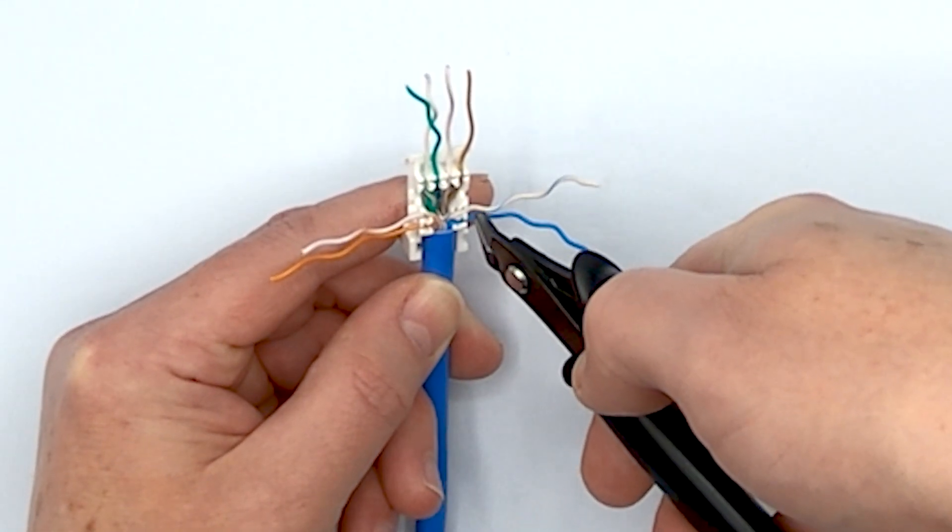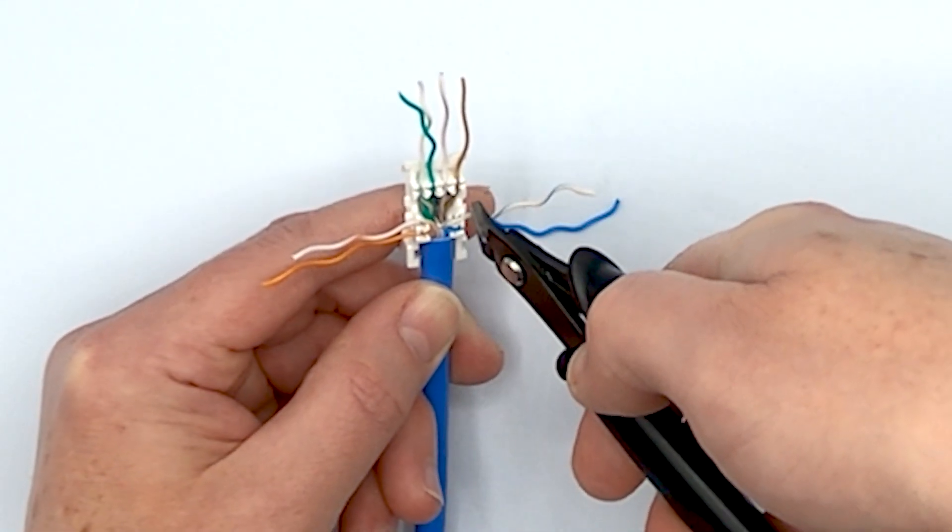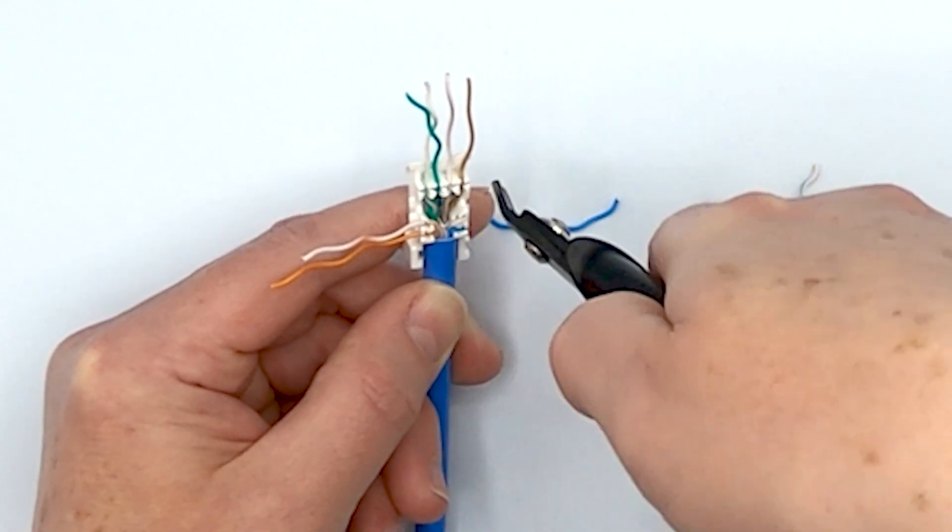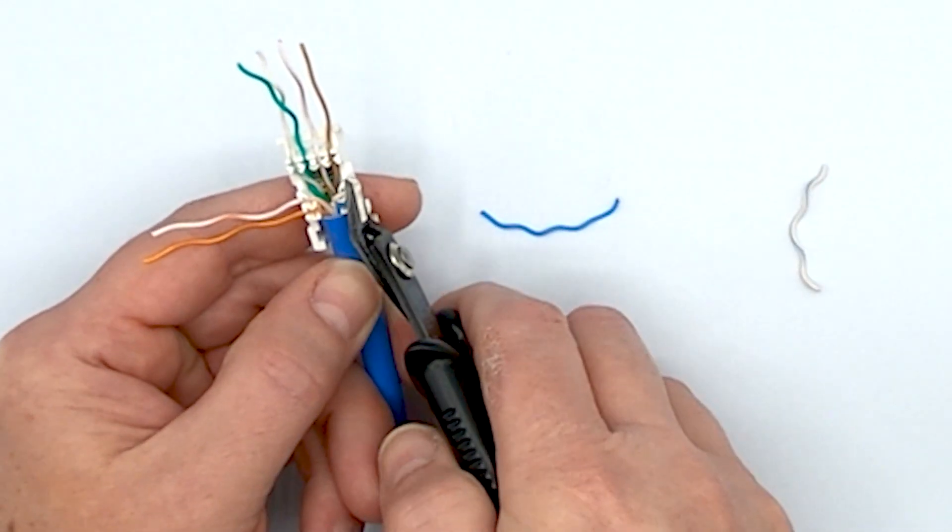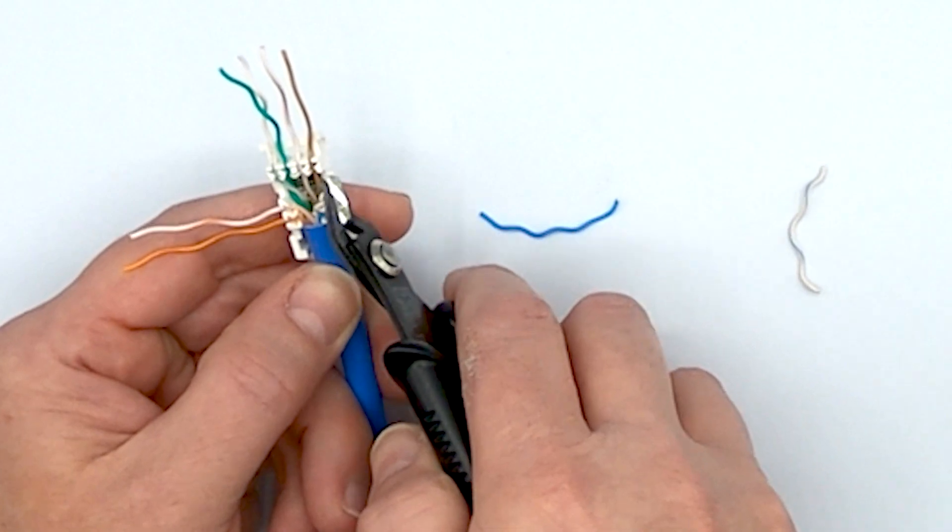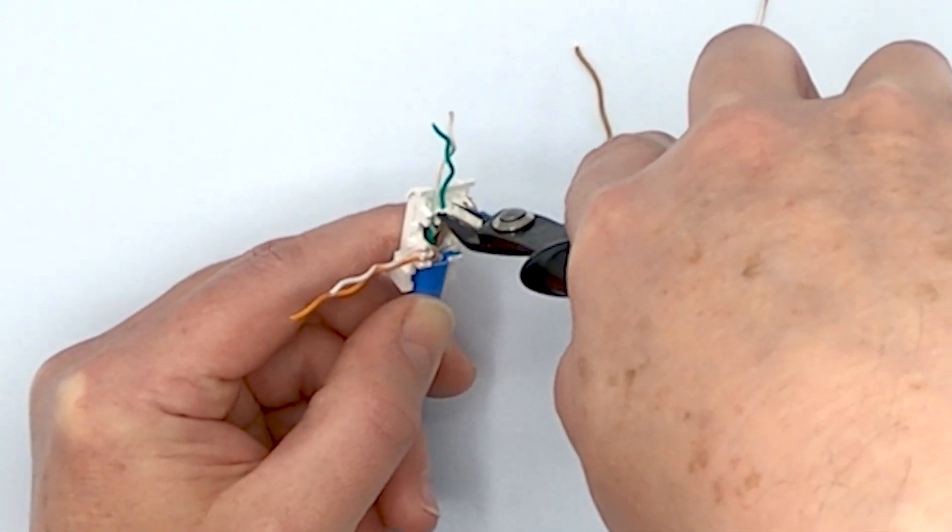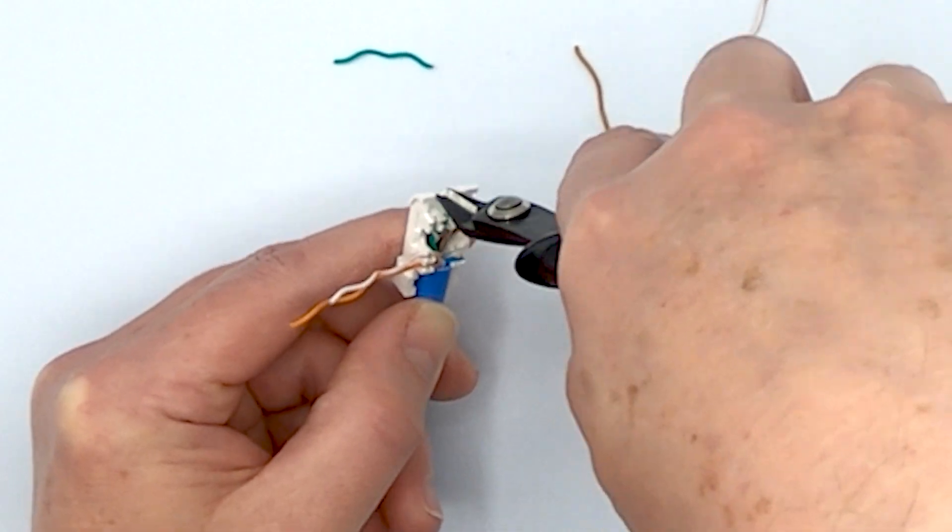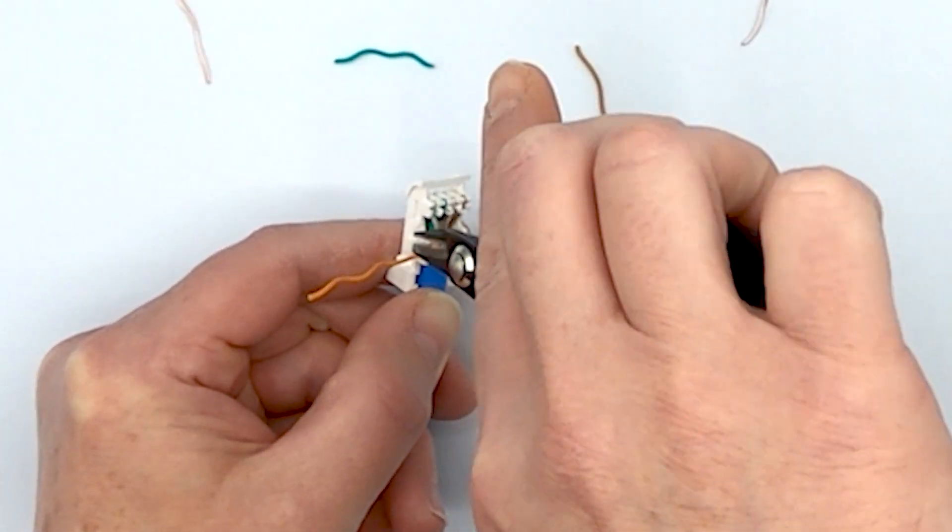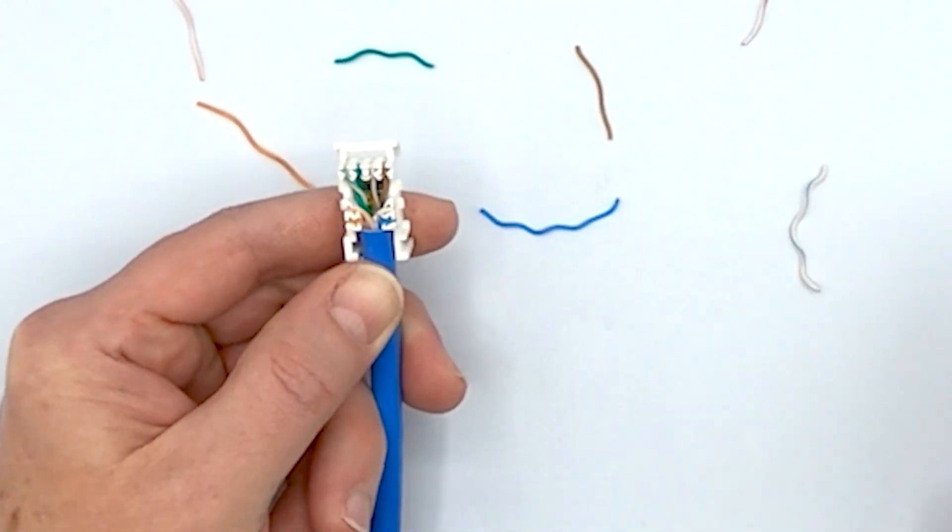Come in from a 90 degree angle to flush cut off these conductors, like this. Don't try to do it from the side because you're not going to have enough room. There we go. All right.